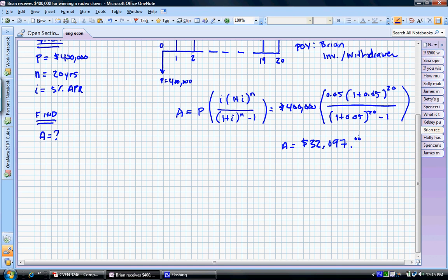Does that make sense? $32,000 withdrawals every year for 20 years. He's earning some interest. That looks like it's in the ballpark to me. Let's quickly use the factor and make sure our answer is correct.